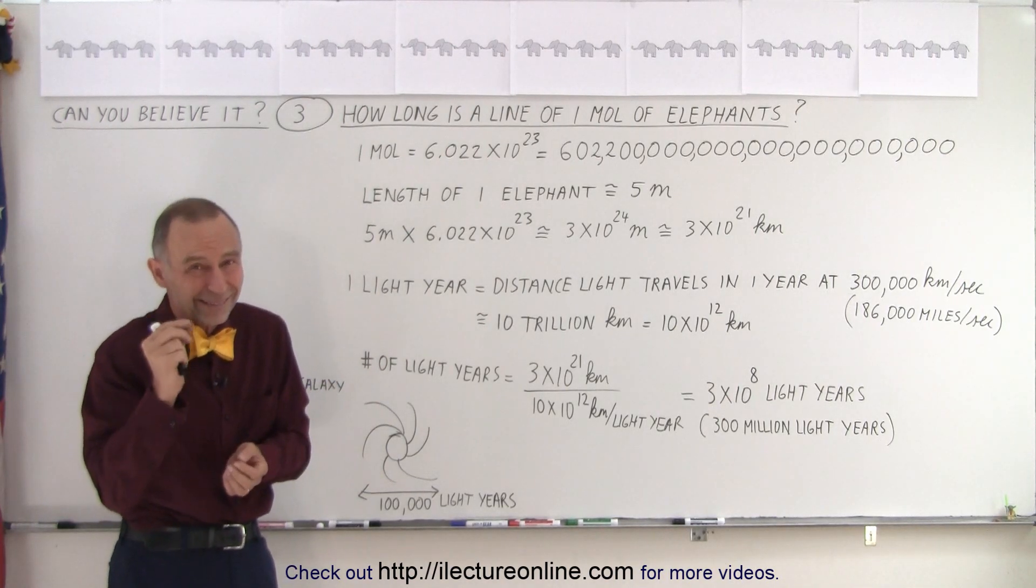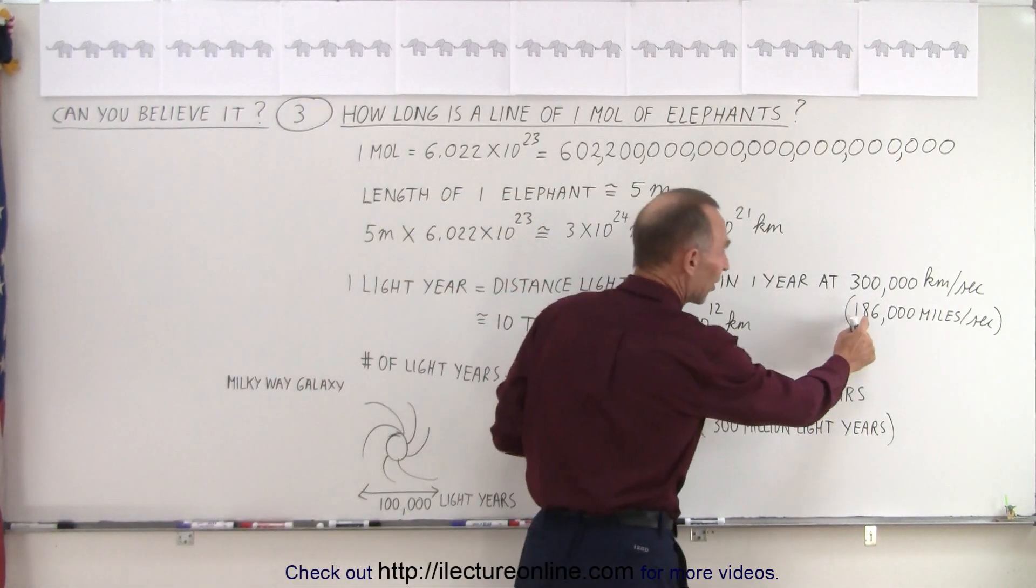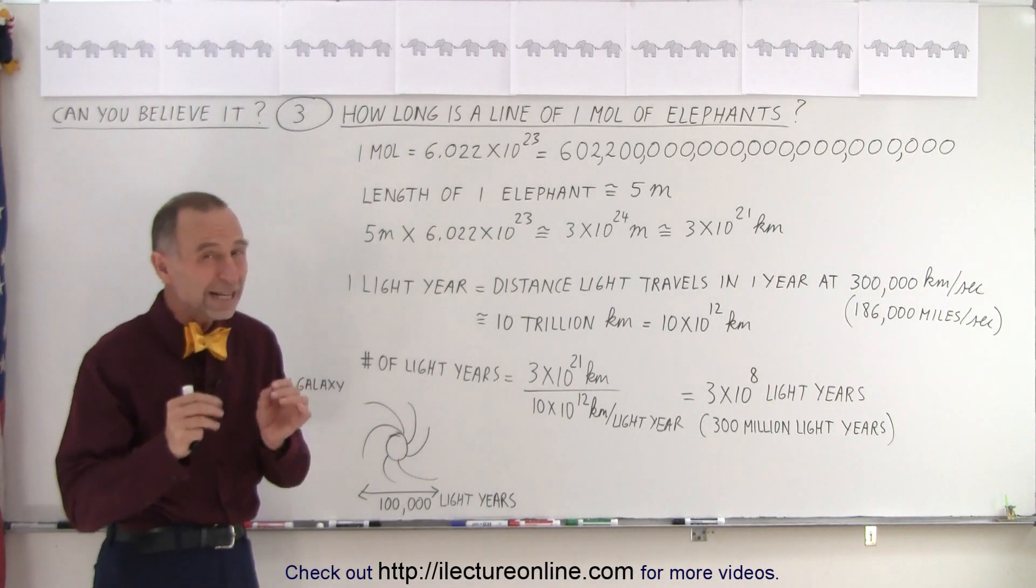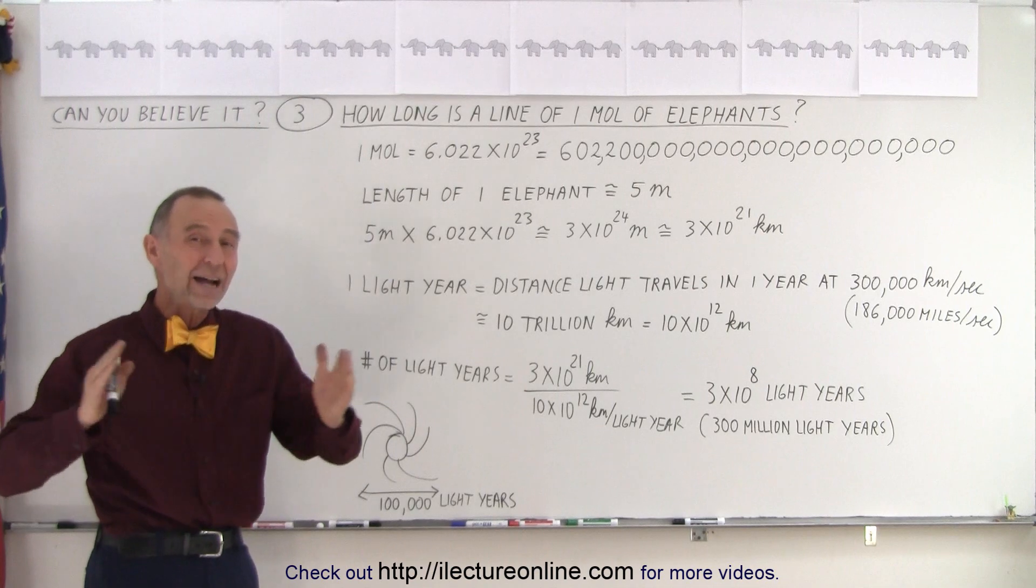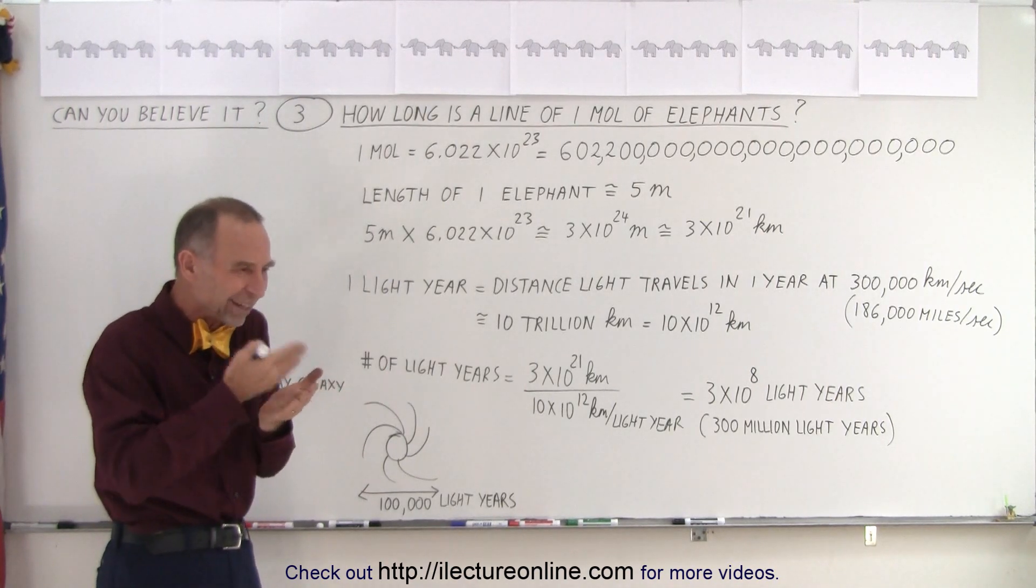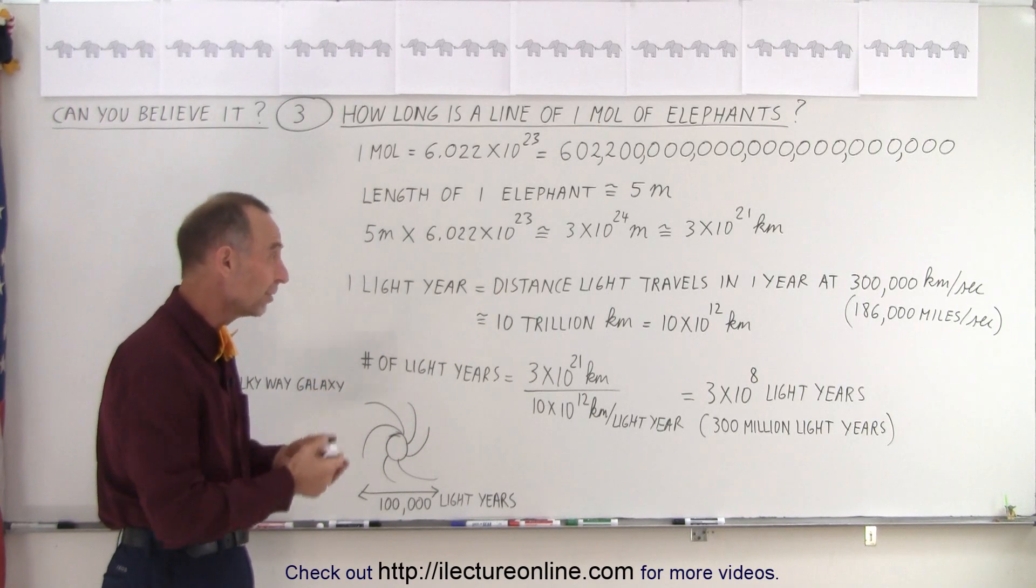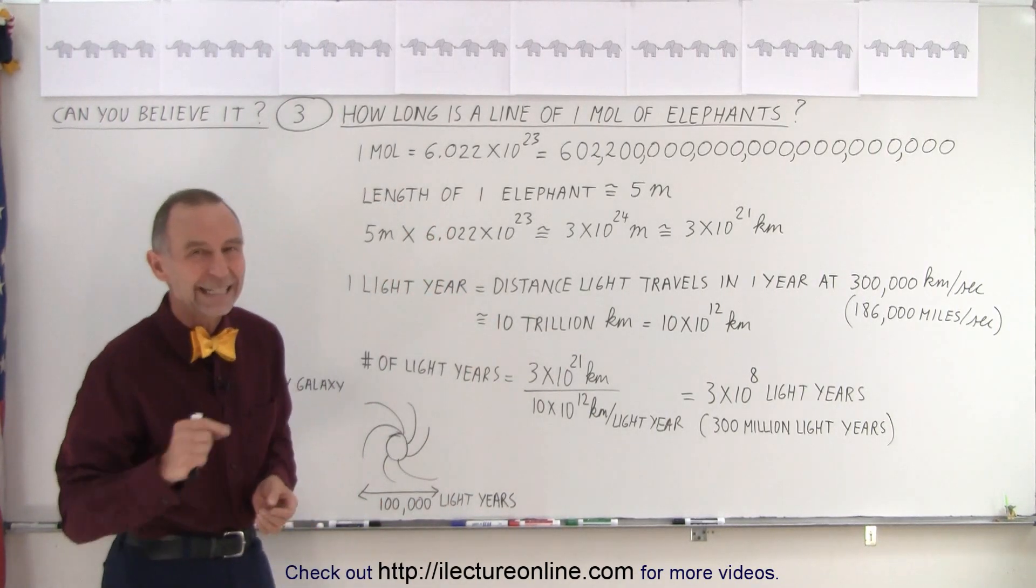From here to the moon, in slightly more than a second. Another way of looking at it is that it's 186,000 miles per second. That is really fast. Now imagine how far light travels in an entire year. Think of the number of seconds in a day and then 365 days in a year. So light travels 10 trillion kilometers in a year.